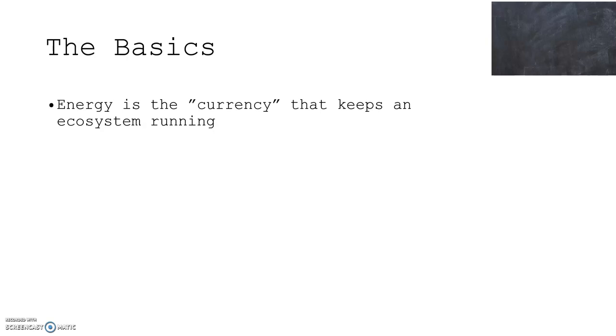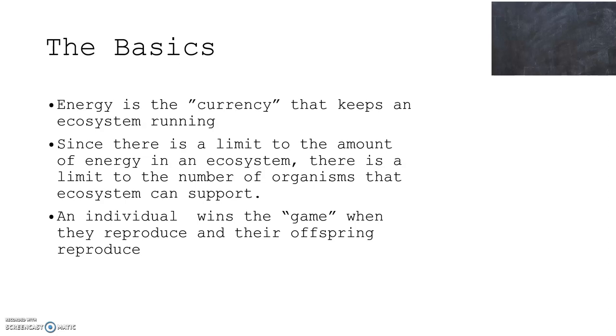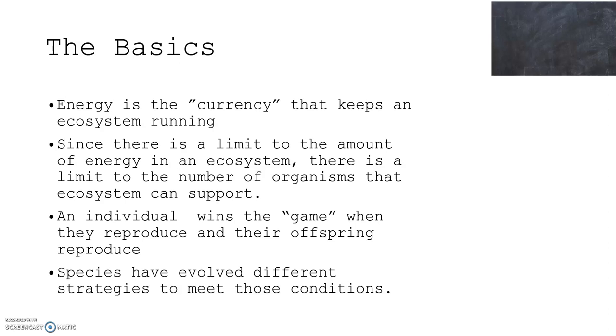This lesson will cover Unit 3, Topics 1 to 4. Let's start with basics. Energy is the currency that keeps an ecosystem running, and since there's a limit to the amount of energy in an ecosystem, there is a limit to the number of organisms that that ecosystem can support. An individual wins the game when they reproduce and their offspring reproduce — that is the goal. Species have evolved different strategies to meet those conditions, and today we're going to talk about some of those different strategies.